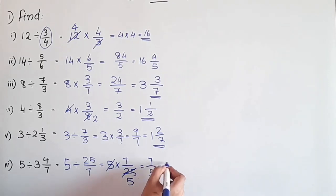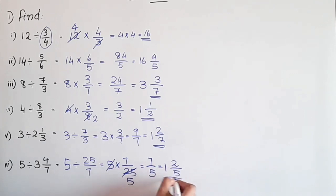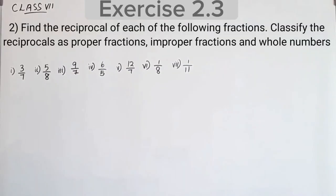Remainder 2, denominator is 5, so the answer is 2/5. Second question.